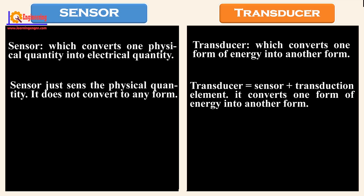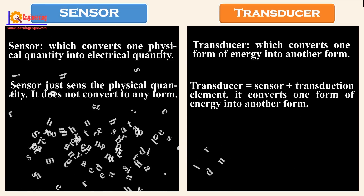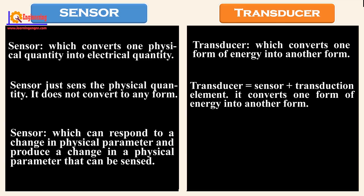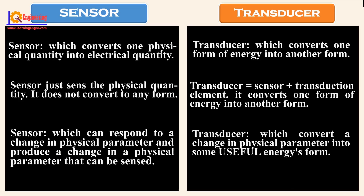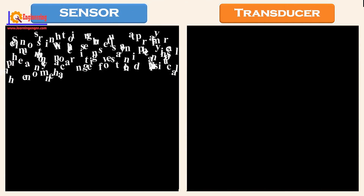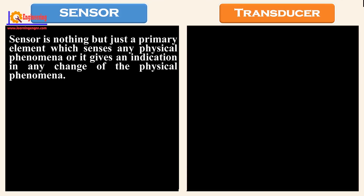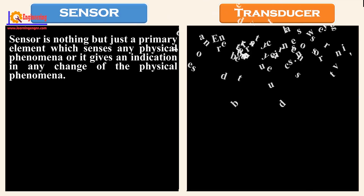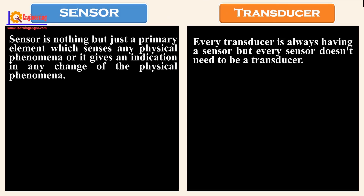A sensor can respond to a change in a physical parameter and produce a change in a physical parameter that can be sensed. A transducer converts a change in a physical parameter into some useful form of energy. A sensor is a primary element which sends any physical phenomena or gives an indication of any change in the physical phenomena. Every transducer always has a sensor, but every sensor doesn't need to be a transducer. Sensor output is always an electrical output.